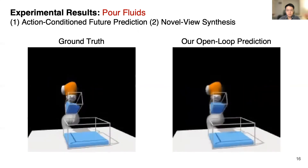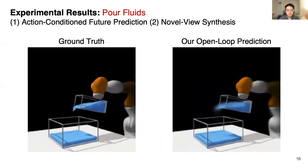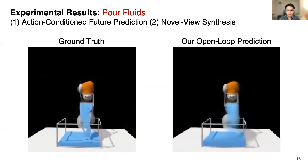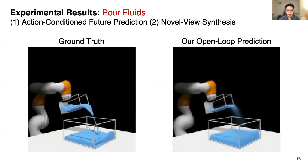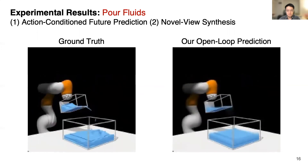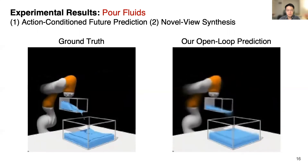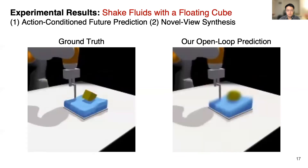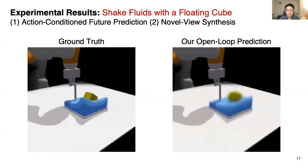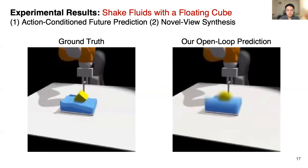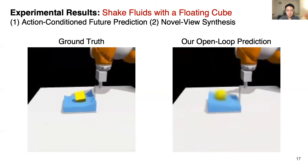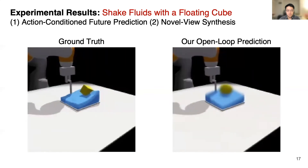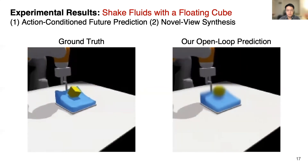Here I'm showing experimental results on action-conditioned future prediction and novel view synthesis. The left is the ground truth, and the right is our model's prediction over 200 time steps. The inputs are the initial visual observations and the subsequent action sequence. The model predicts the future and renders the image from a query viewpoint. Our model makes reasonable predictions but deviates from the ground truth when going too far into the future. Still, the model can be useful for planning and control when used in a closed loop. The learned model also works in cases where we shake a box of fluids with a cube floating on the surface, capturing the wave dynamics.